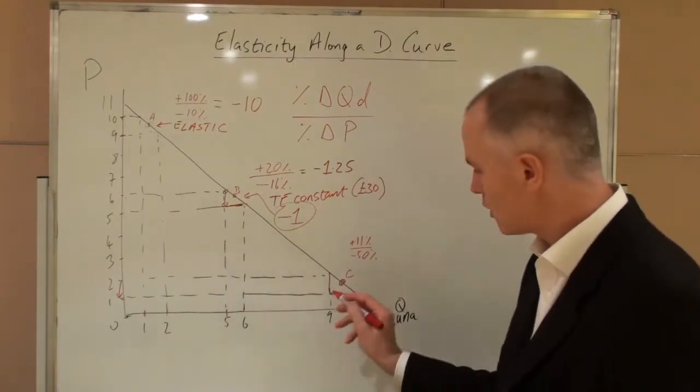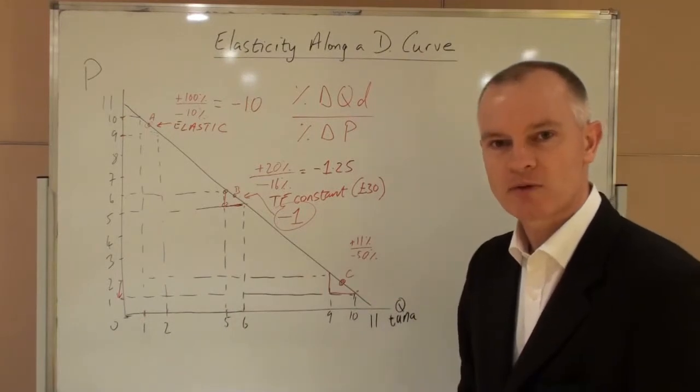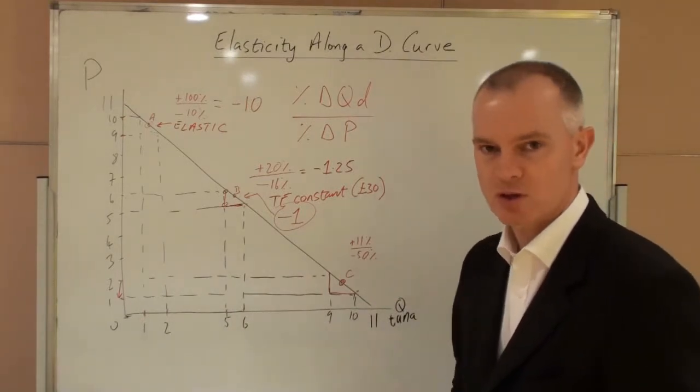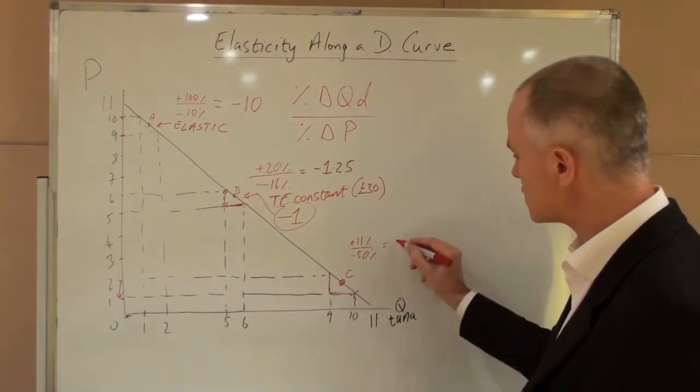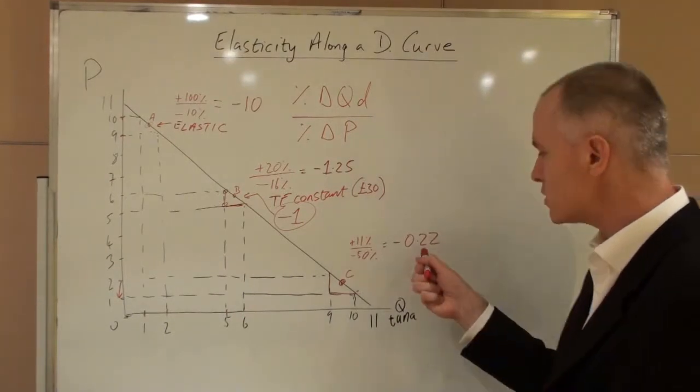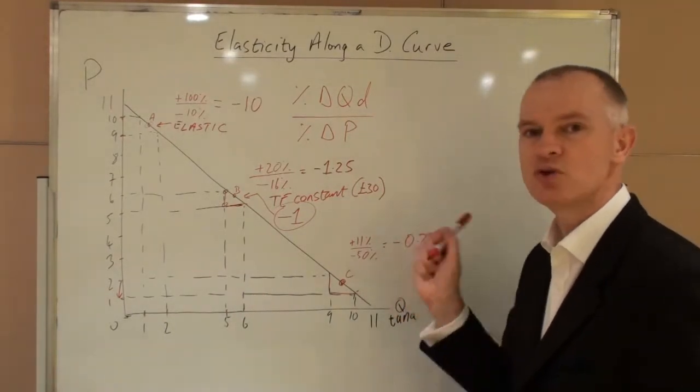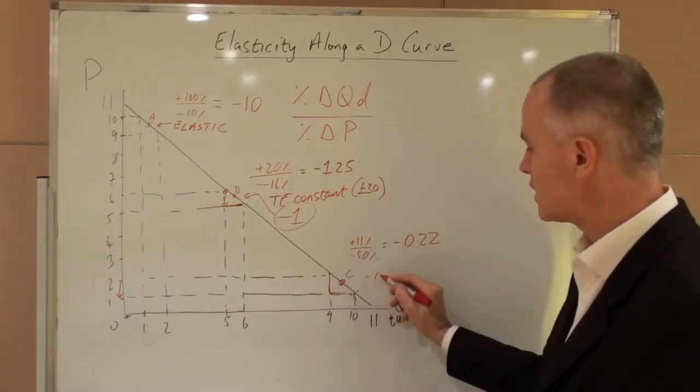But as a percentage, nine to ten is only eleven percent. This time, the change in demand is much smaller than the price change. And this is inelastic. The actual value is minus 0.22. Thus, demand is changing by 0.22 as much as the price change. And this is inelastic.